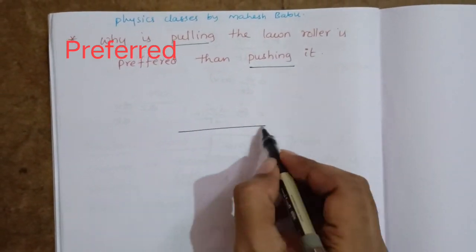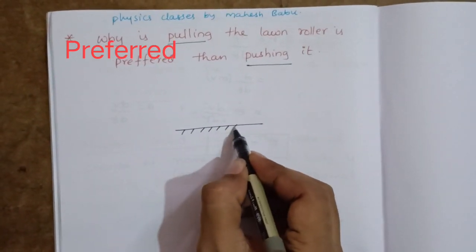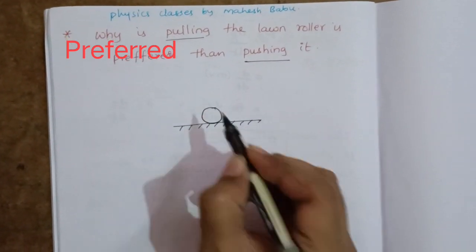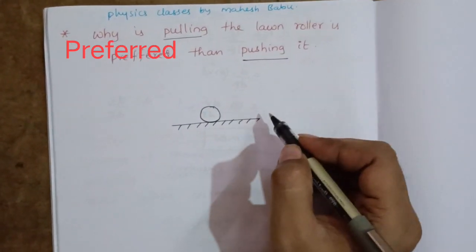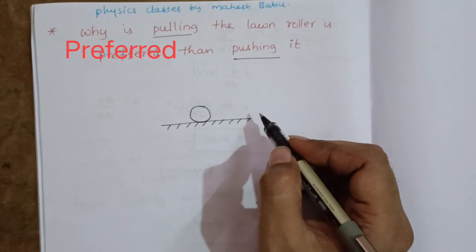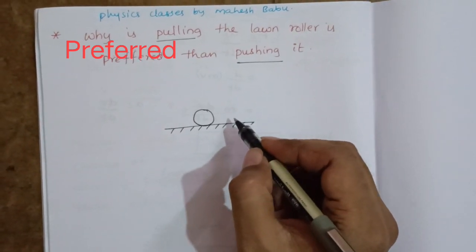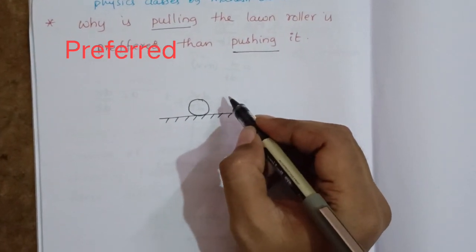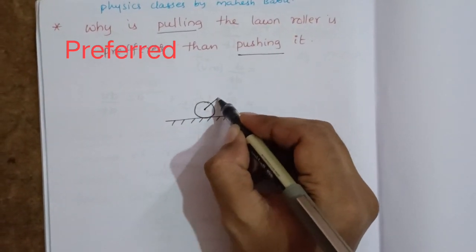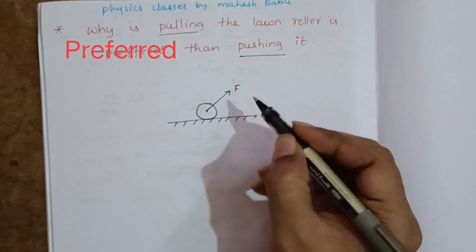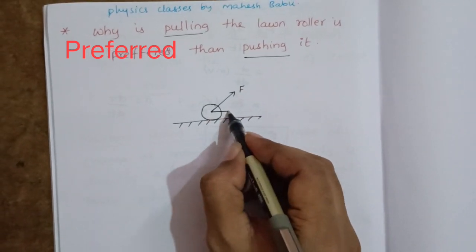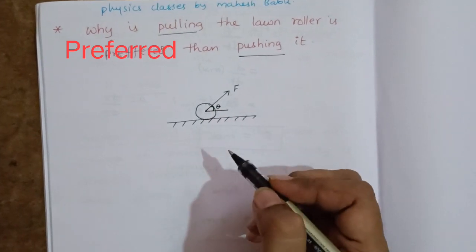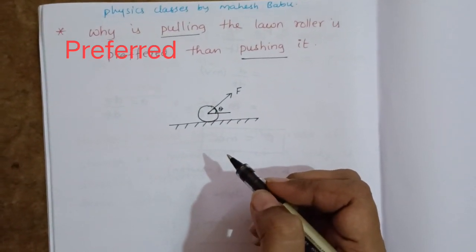We will see — this is the surface, a roller is placed here. The land roller is pulled by a force F, making an angle theta with the horizontal.